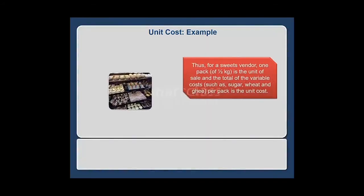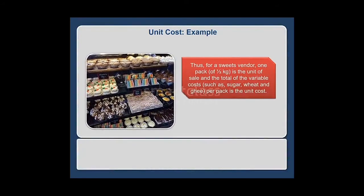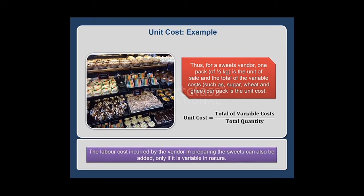For a sweets vendor, one pack of half kg is the unit of sale, and the total of variable costs such as sugar, wheat, and ghee per pack is the unit cost. To calculate per unit cost, divide the total of variable costs by the total quantity. The labor cost incurred by the vendor in preparing the sweets can also be added, but only if it is variable in nature.